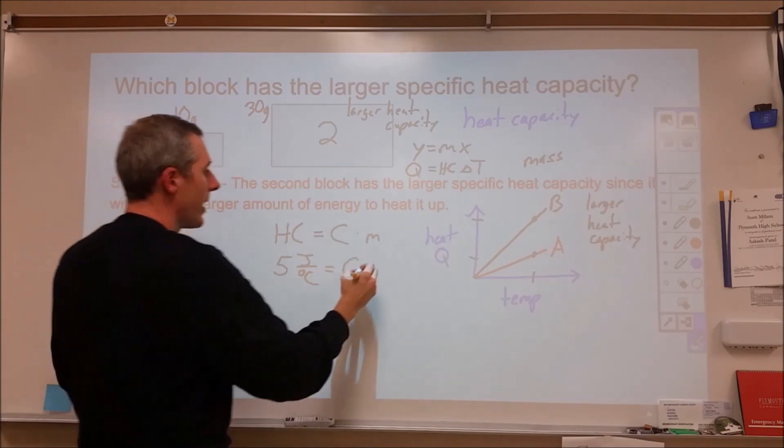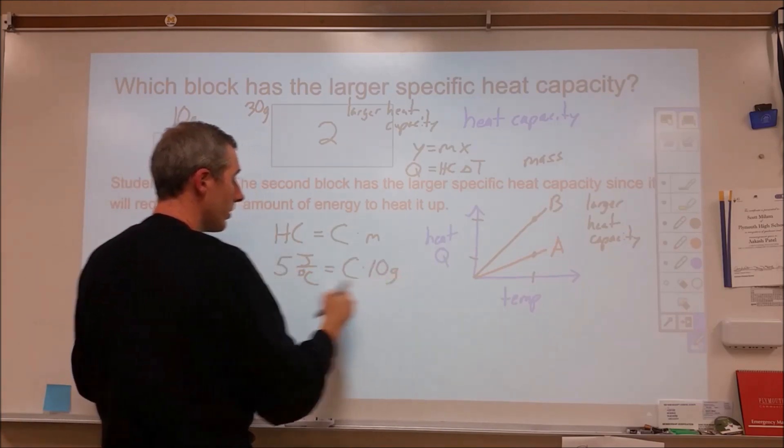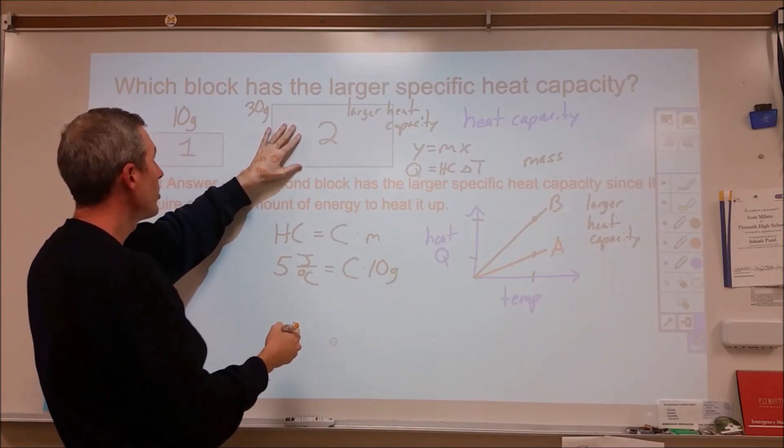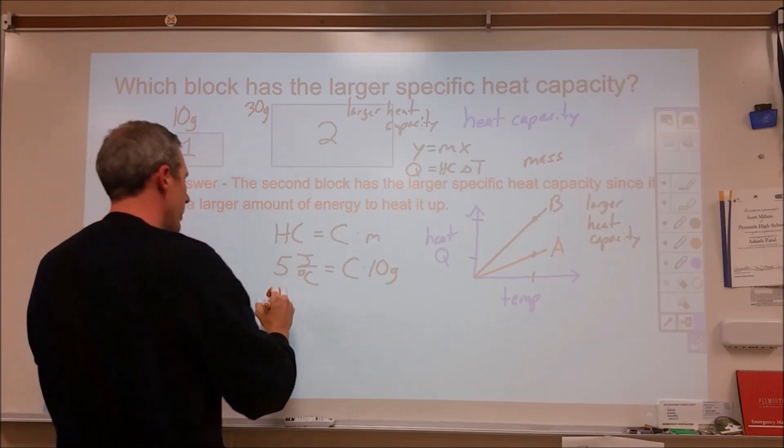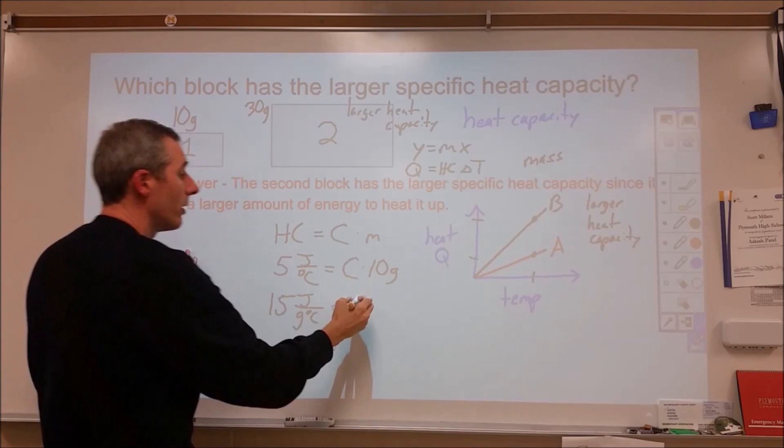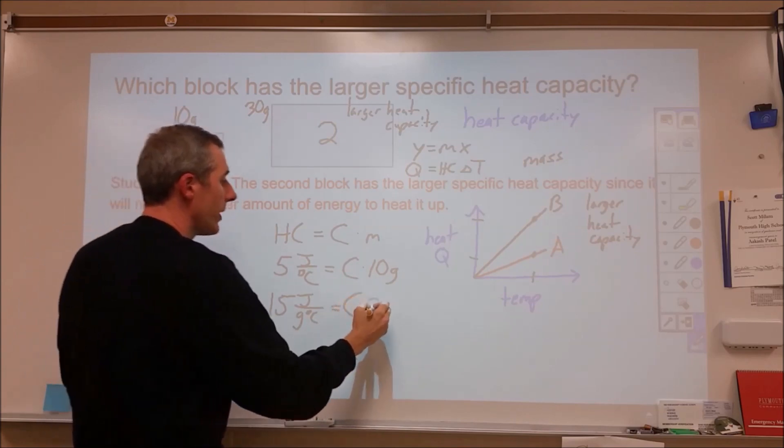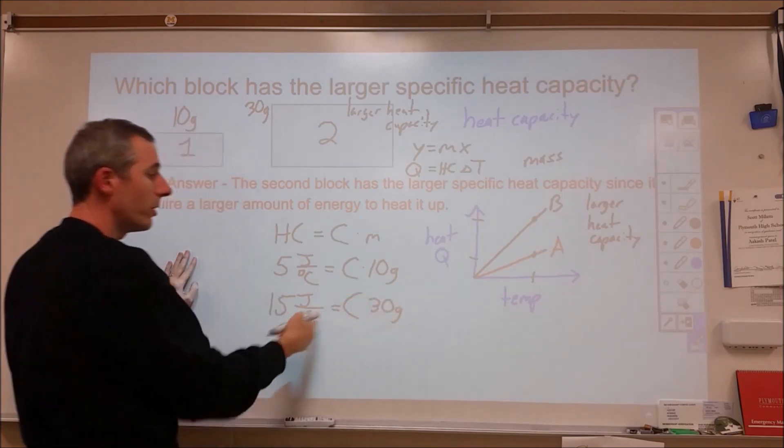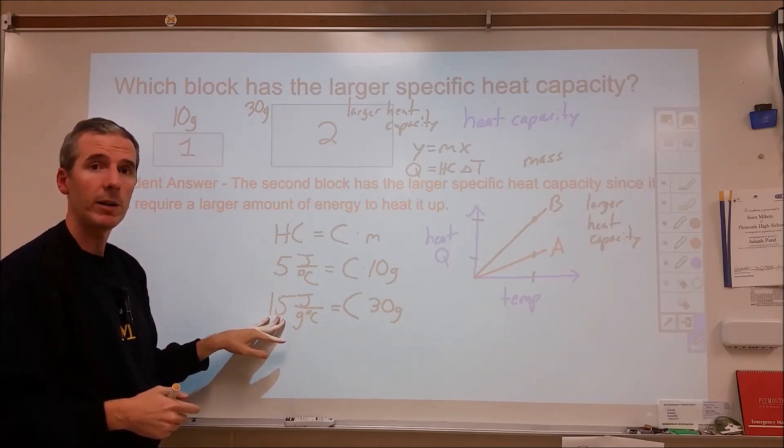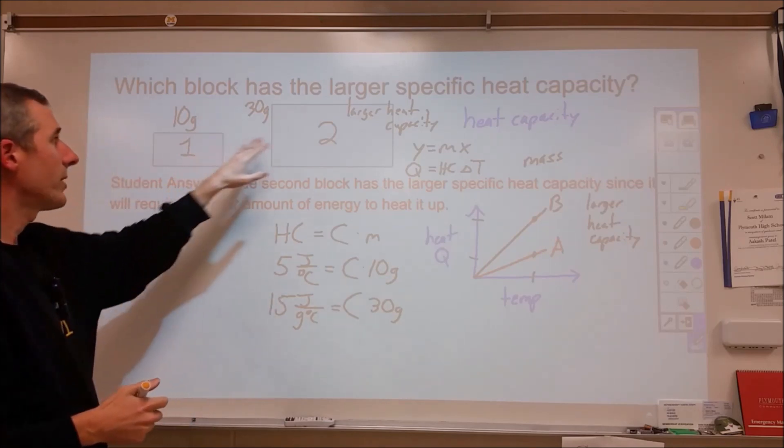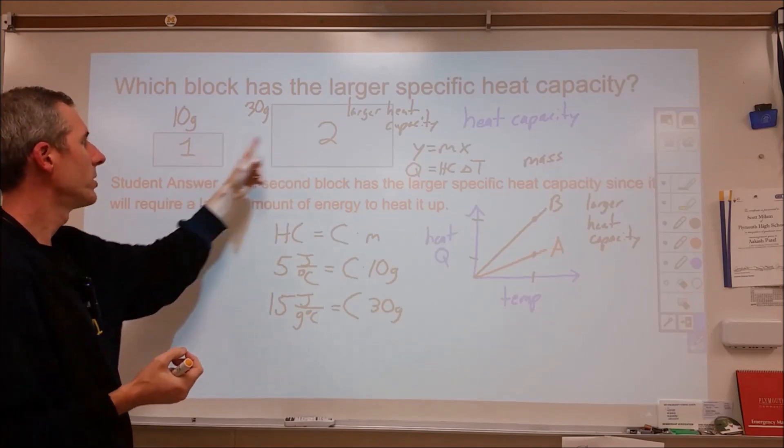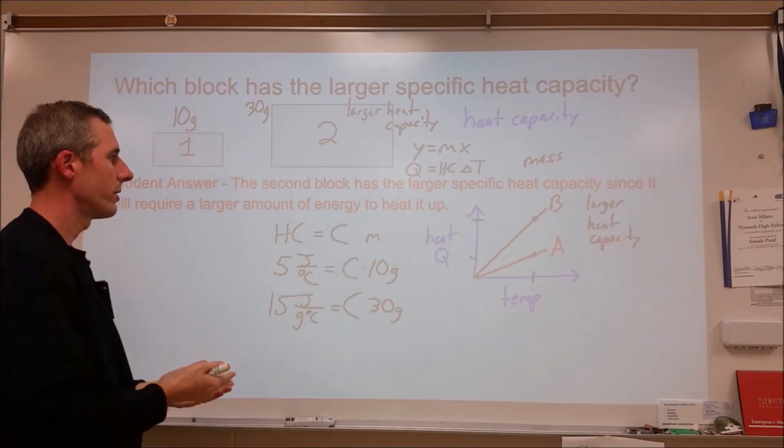So the specific heat in this case is 0.5. This one will have a larger heat capacity, it'll be three times as much, it'll be 15. But now I'm going to end up with the same specific heat capacity because I'm going to divide that by 30 grams to get this. So this is going to come out to 0.5 specific heat capacity as well. The specific heat capacity is irrelevant of amount because it's based on the material, and so the material here being the same causes this to differ.